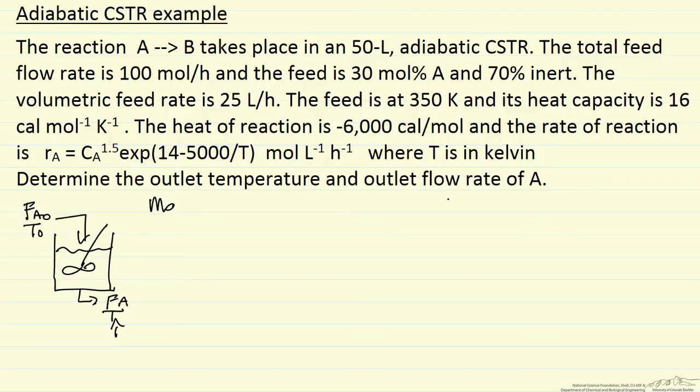The first thing we want to do is write a mass balance on component A. It's a steady state mass balance. So the flow rate in, we know, minus the flow rate out. This is molar flow rate, so moles per hour. And rate of reaction times volume, where the rate of reaction for A is a negative term.